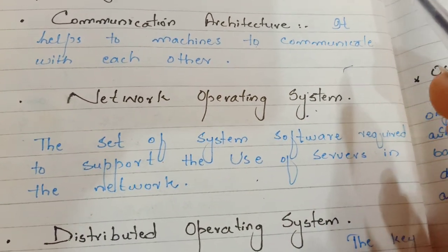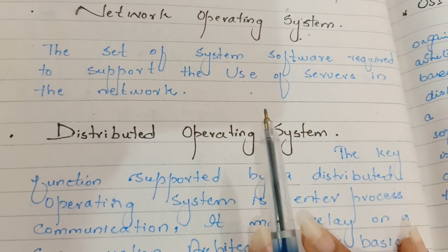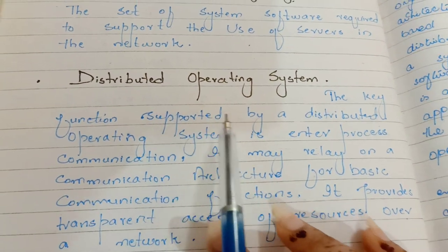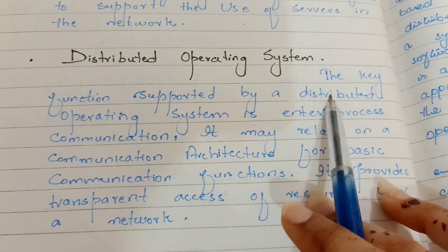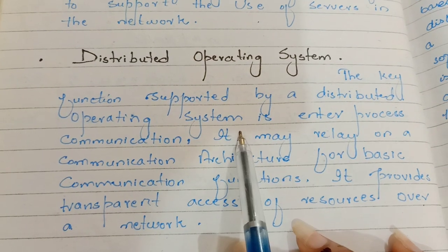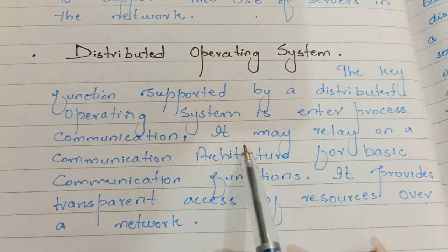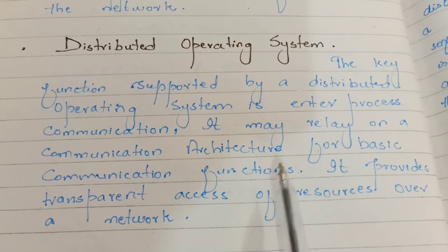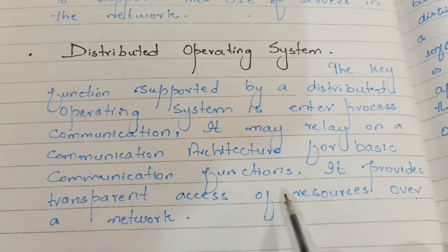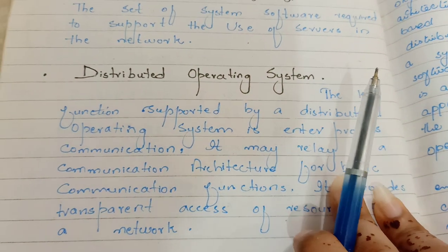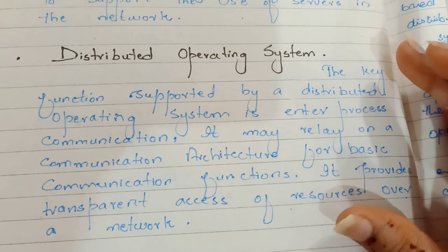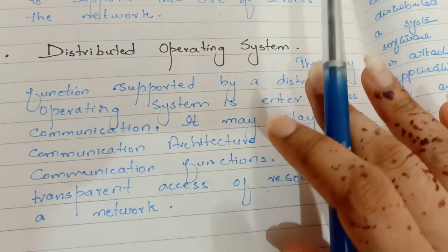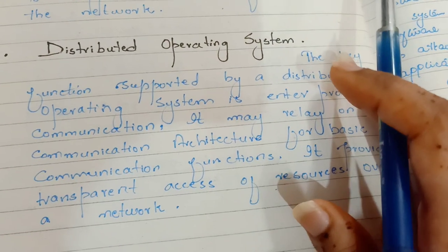Finally, you should have a distributed operating system. The key function supported by a distributed operating system is inter-process communication, and it may rely on the communication architecture for basic communication functions. It provides transparent access of resources over a network, so that you can share different resources and any machine does not need to know where the task is performed or where the resource is located.